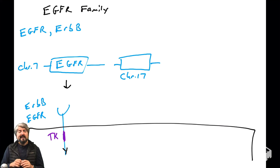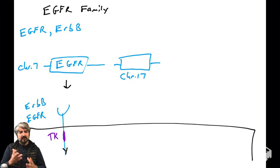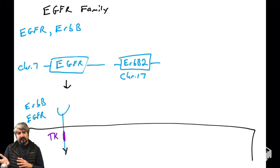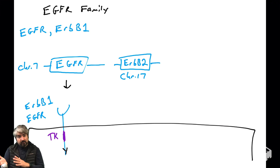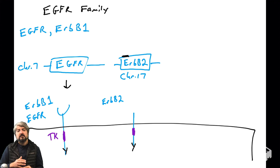On chromosome 17 is a gene that has very high homology — very similar — to EGFR, most likely arising via gene duplication. This gene has a name called ERBB2, which means EGFR is actually known as ERBB1. This other gene, ERBB2, produces a protein that is similar but not identical to the EGFR protein.